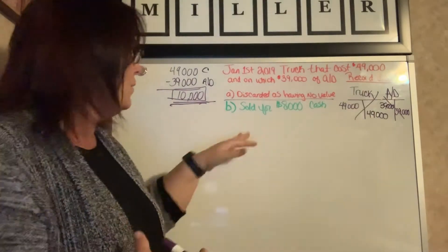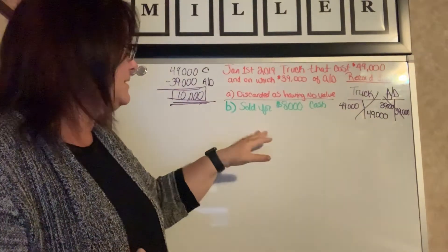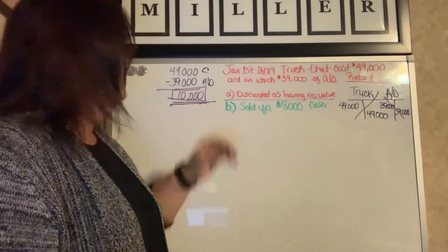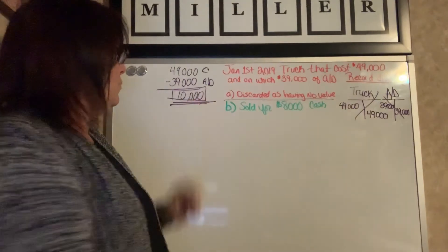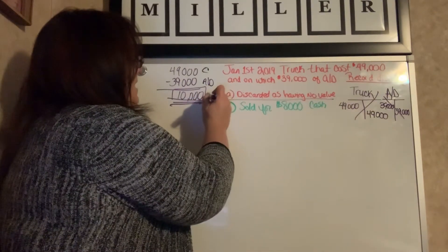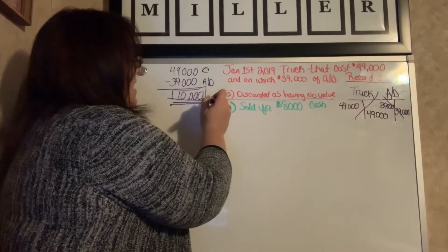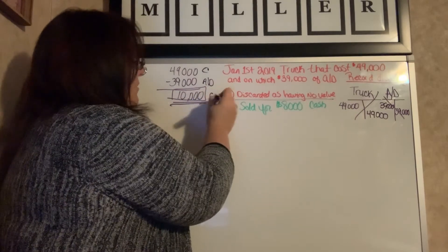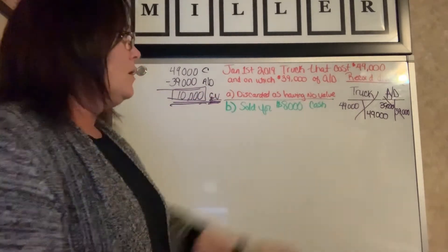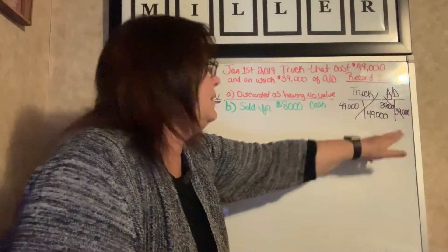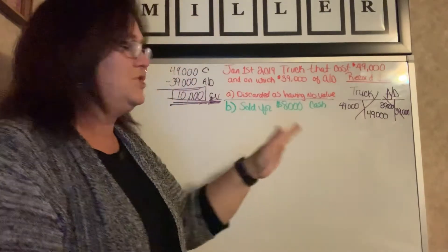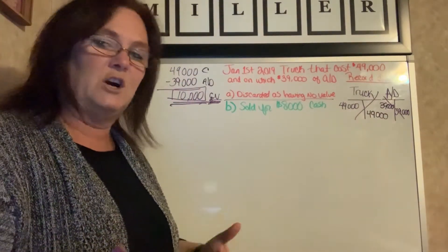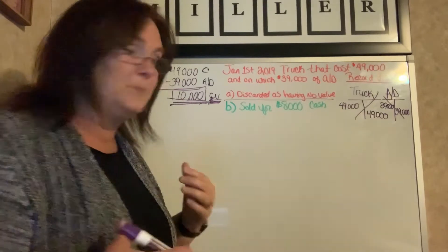The machine had some sort of value and we were able to sell it for $8,000 cash. Our math stays the same — we have this missing money of $10,000, which is basically our carrying value of that asset. We have our truck and our accumulated depreciation, which is still treated exactly the same. But now because we received cash, our journal entry is a little bit different.